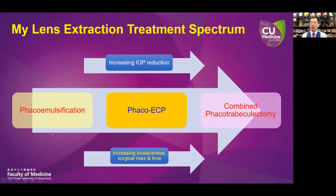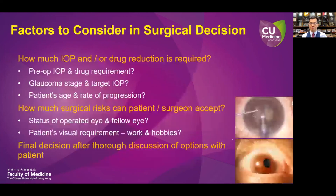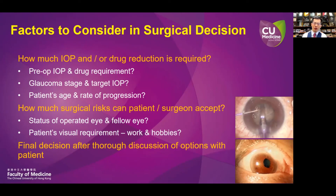To summarize my preferred lens extraction treatment spectrum: phacoemulsification alone, then combined FACO-ECP if more IOP reduction is needed, and finally combined FACO-trabeculectomy for ultimate IOP reduction. How do we decide which intervention to go for first? It depends on several considerations: how much IOP and/or drug reduction is required, taking into account preoperative IOP, drug requirement, glaucoma stage, target intraocular pressure, patient's age, and rate of disease progression. Secondly, how much surgical risk the patient or surgeon can accept. Most importantly, you must have a thorough discussion of all the pros, cons, and risks of the different surgical options with the patient before arriving at a final decision.